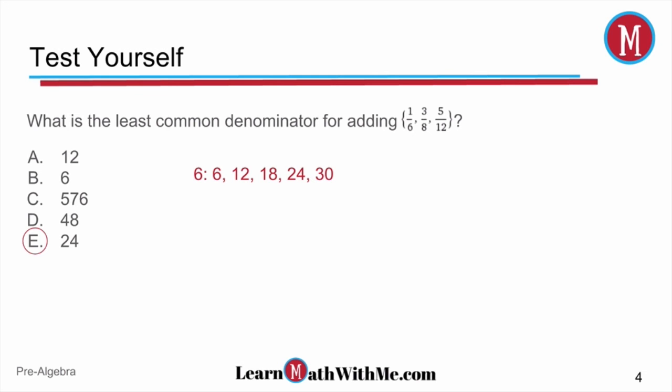Now we'll look at the 8 of three eighths, and we write down 8, 16, 24. We're just writing out the multiples, and we see that 24 is also in 6. We have a multiple there. Well now let's look at 12 from the 5 twelfths, and we have 12, oh, and there's 24 again. So our least common denominator is 24.